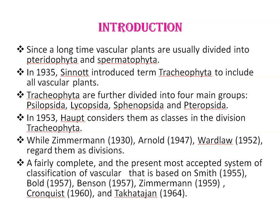Pteridophyta are further divided into four groups: Psilopsida, Lycopsida, Sphenopsida, and Pteropsida. But it is not certain whether these — Psilopsida, Lycopsida, Sphenopsida, and Pteropsida — are divisions or classes. In 1953, Hobbes considered them as classes in the division Tracheophyta, while Zimmerman in 1930, Arnold in 1947, and Wardler in 1952 regarded them as divisions.